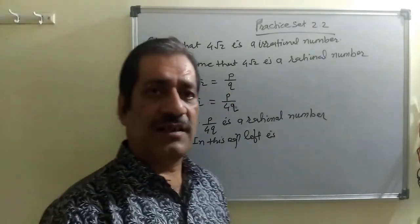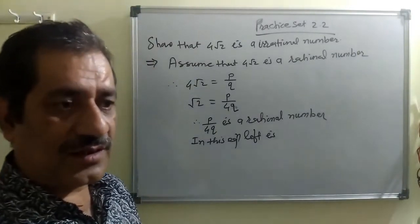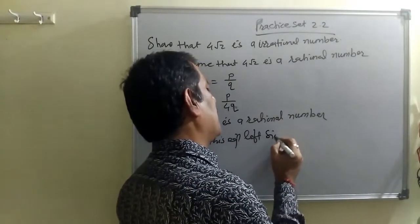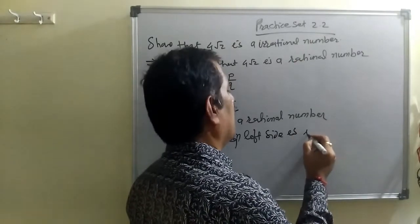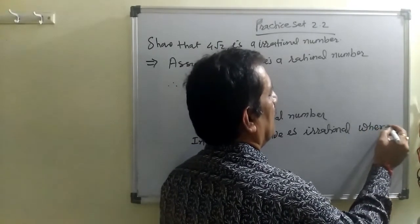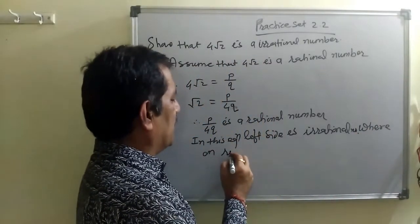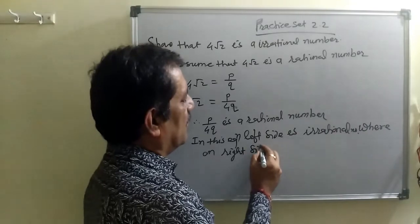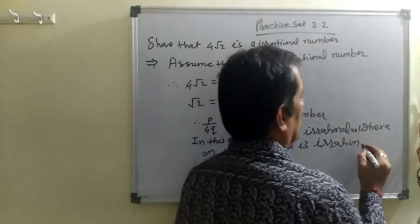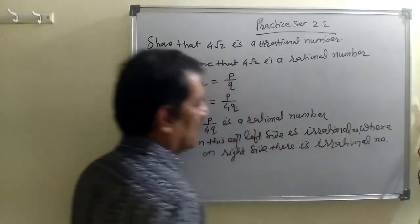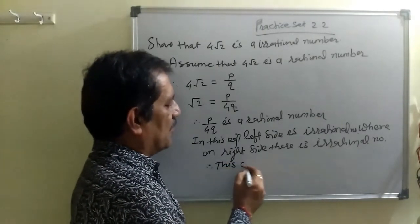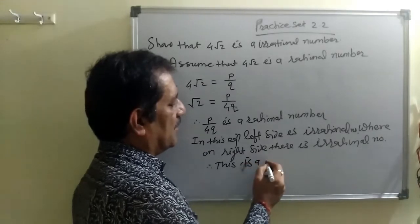In this equation, the left side is root 2, which we have already proved is an irrational number. On the right side, P upon 4Q is a rational number. So we have a rational number equal to an irrational number, which is a contradiction.